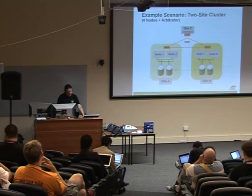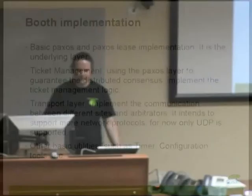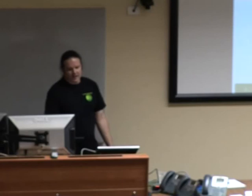In terms of implementation, the Paxos and Paxos lease algorithm underlies all of this. Jiadu has some interest in splitting off the Paxos part into a separate library so that other people with distributed consensus problems can use it — that hasn't happened yet. Ticket management builds on top of the Paxos layer. Transport between sites is via UDP at the moment. When these slides were written, support for more protocols was planned — if you grep through the source code you'll see functions suspiciously named TCP and SCTP — but for now, UDP.